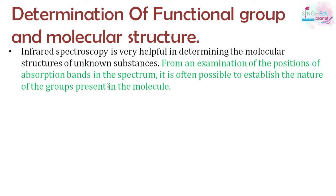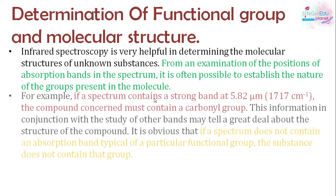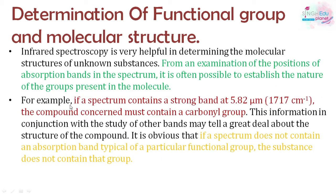It will also tell us which groups are present in the molecule. For example, in a spectrum if we have a band at 5.8 micrometers or 1720 cm⁻¹ as a strong band, this will indicate a carbonyl group. This information, combined with other bands, tells us what functional groups are present in the compound.